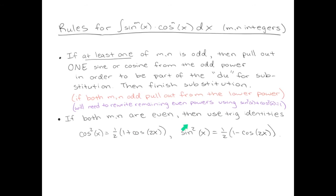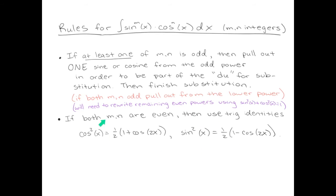To summarize: if at least one of m or n is odd, pull out one odd power and rewrite the remaining even powers using the identity sine squared plus cosine squared equals 1. If no odd powers appear and both are even, use the half-angle trig identities. Make sure you have these rules written down before class.